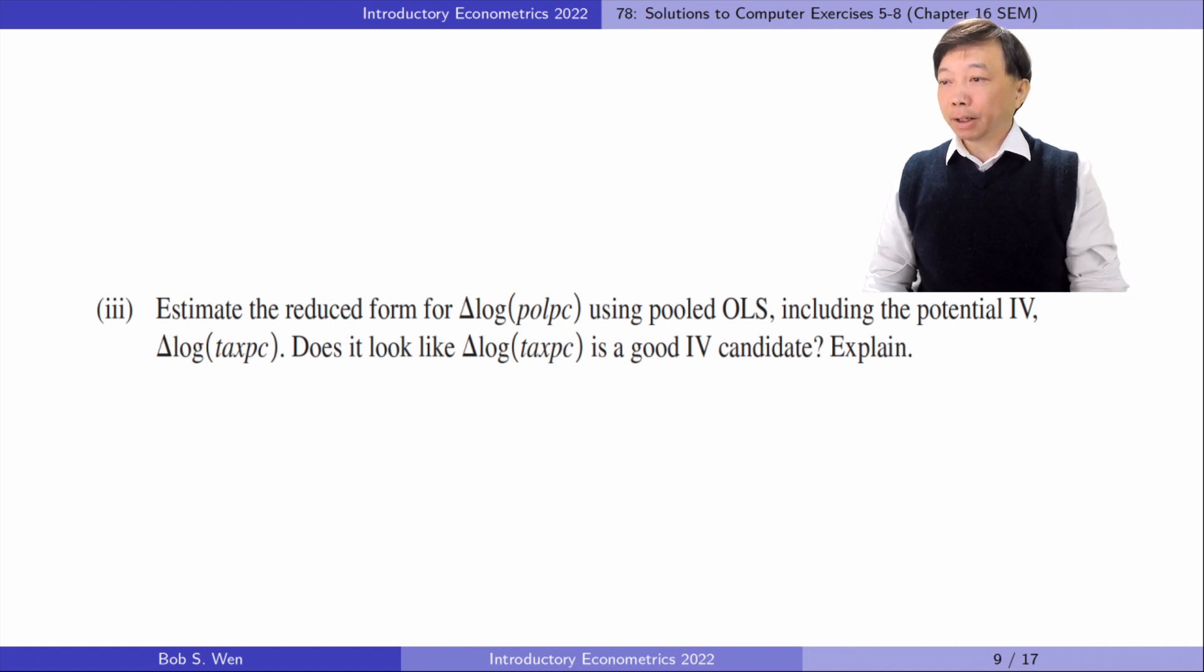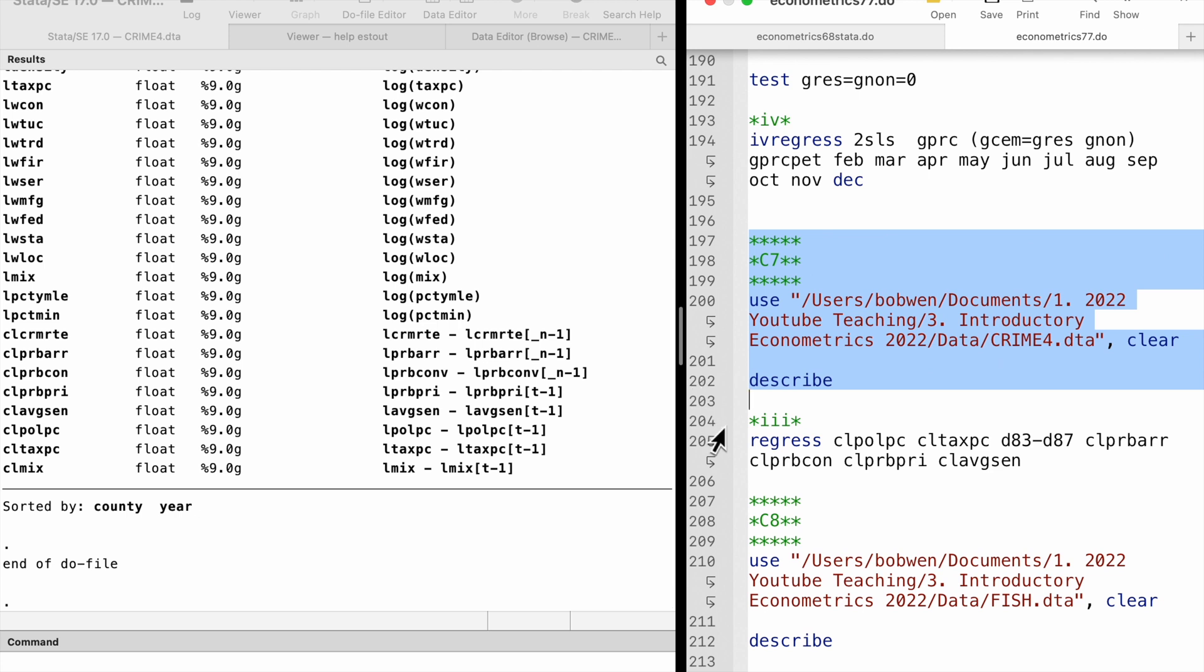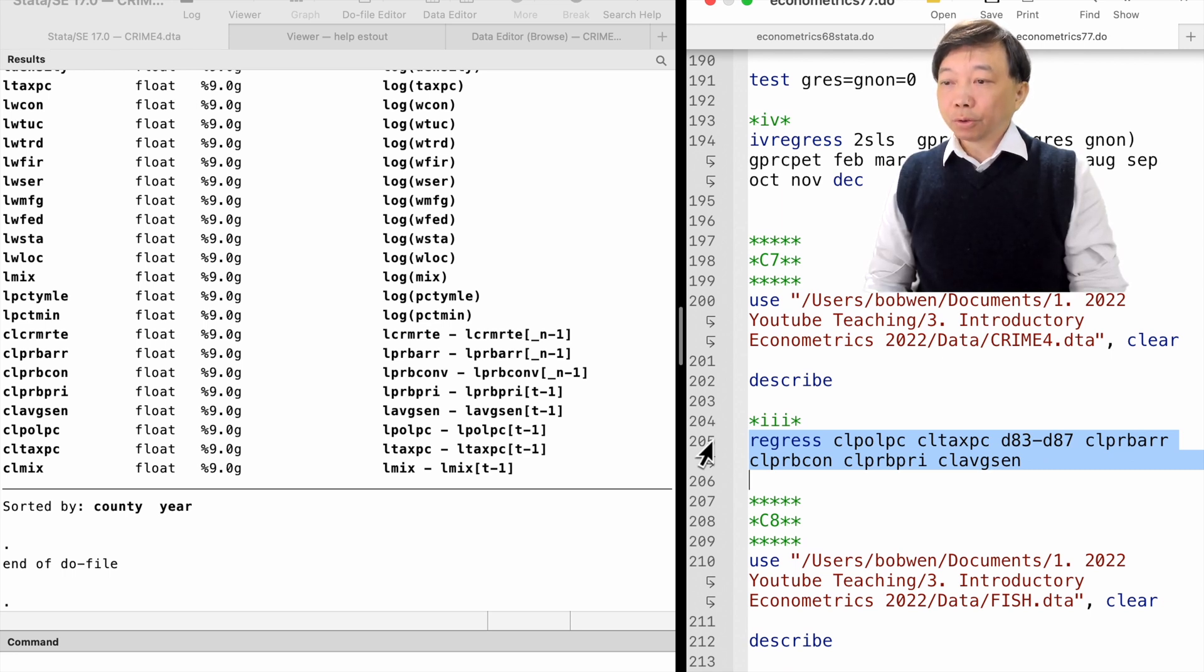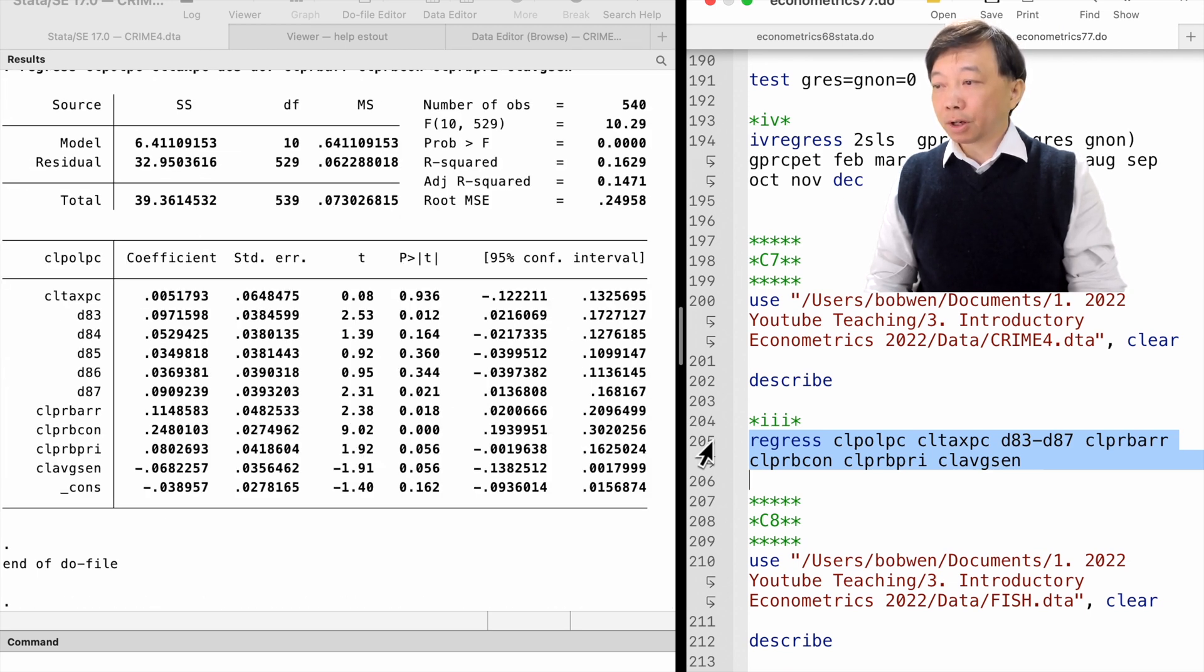In part 3, estimate the reduced form for delta log police per capita using pooled OLS, including the potential IV, delta log taxes per capita. Does it look like it is a good IV candidate? Explain. In the first stage regression, the OLS estimate of the IV is not statistically significant at any reasonable level. So it fails to satisfy the instrument relevance requirement and is not a valid IV.